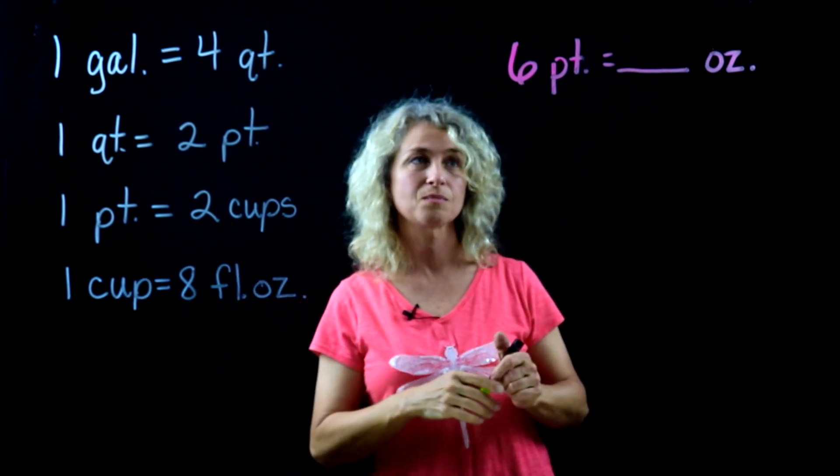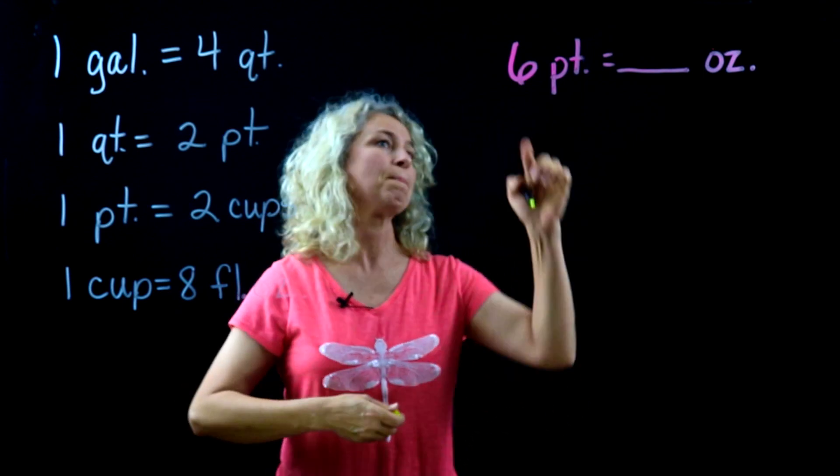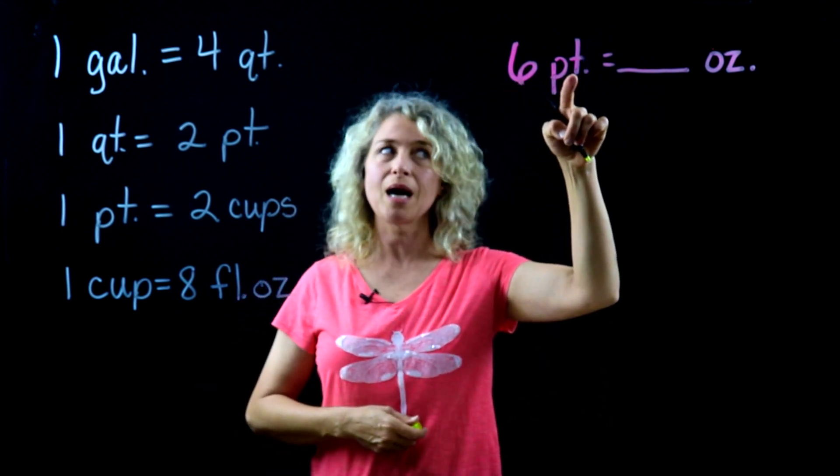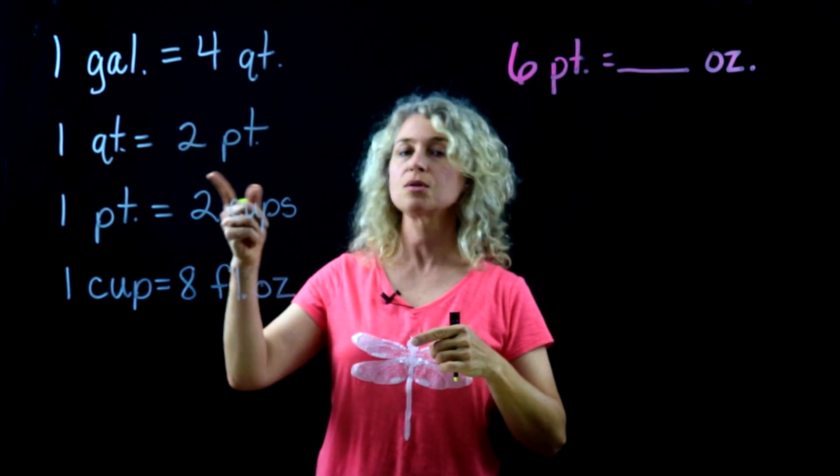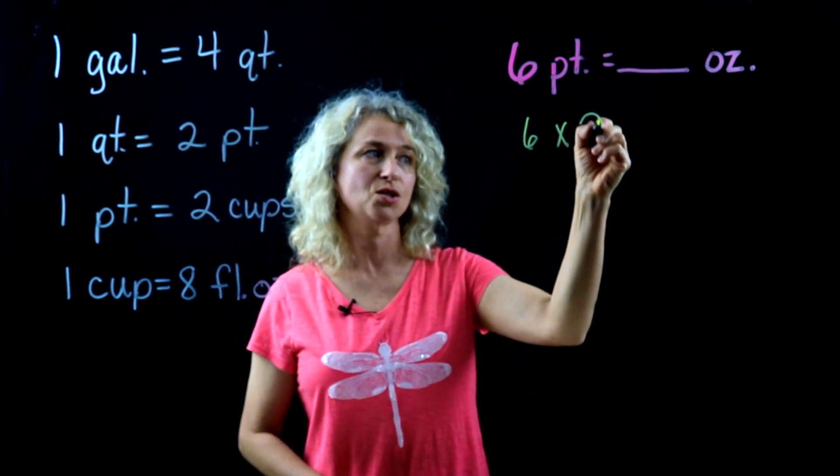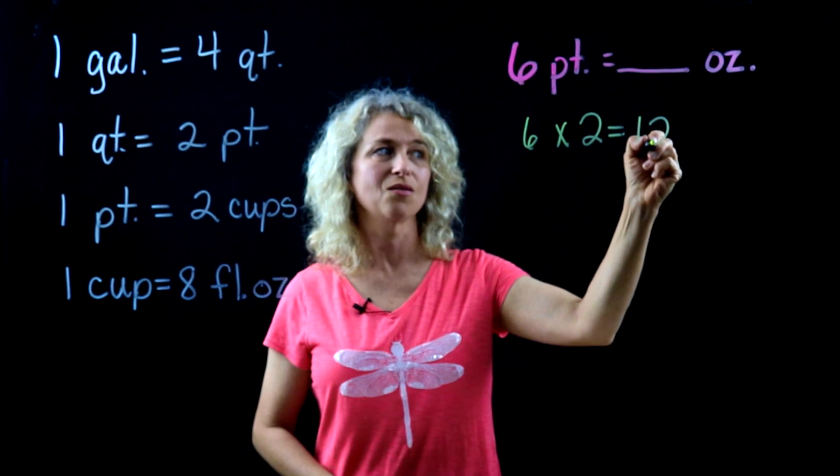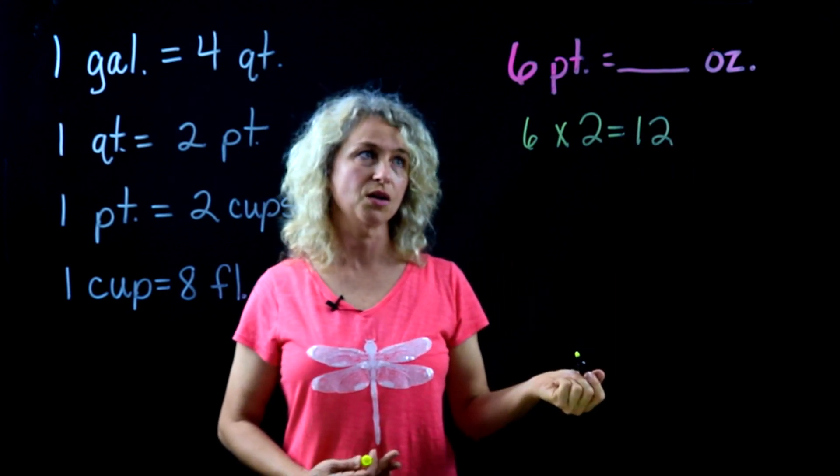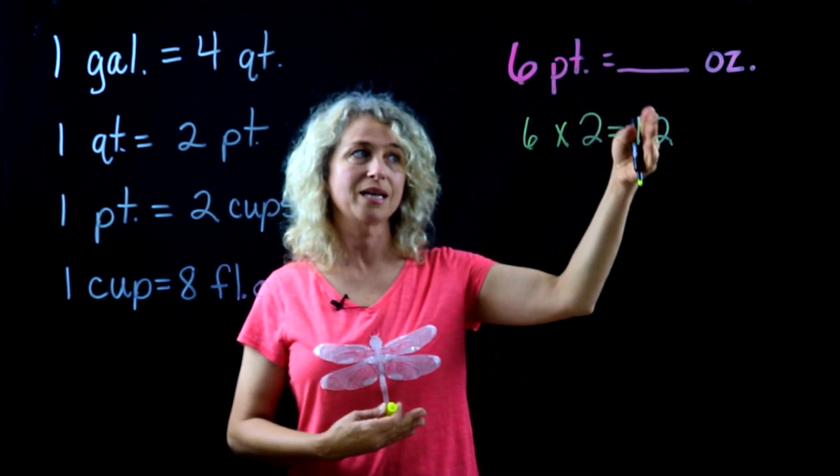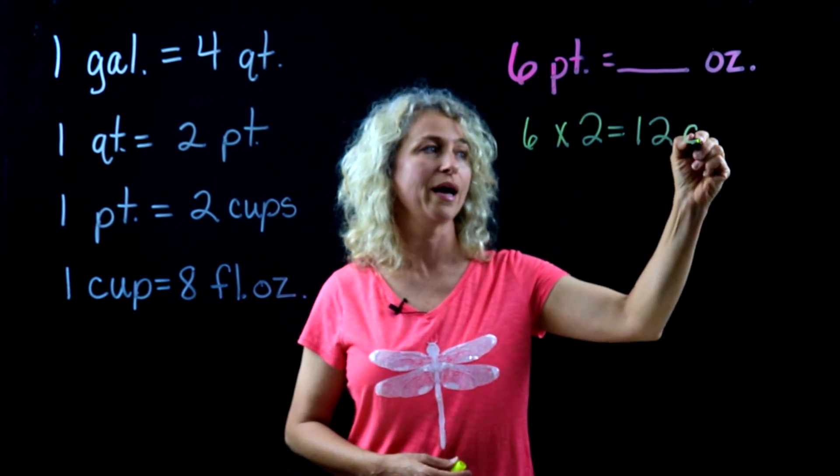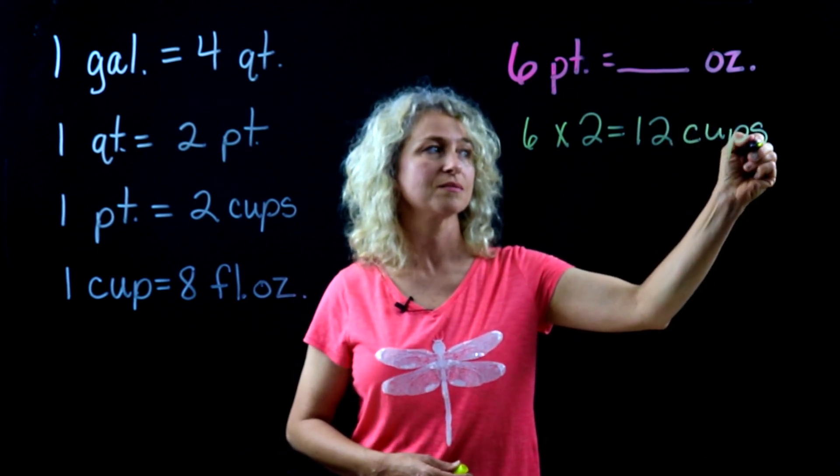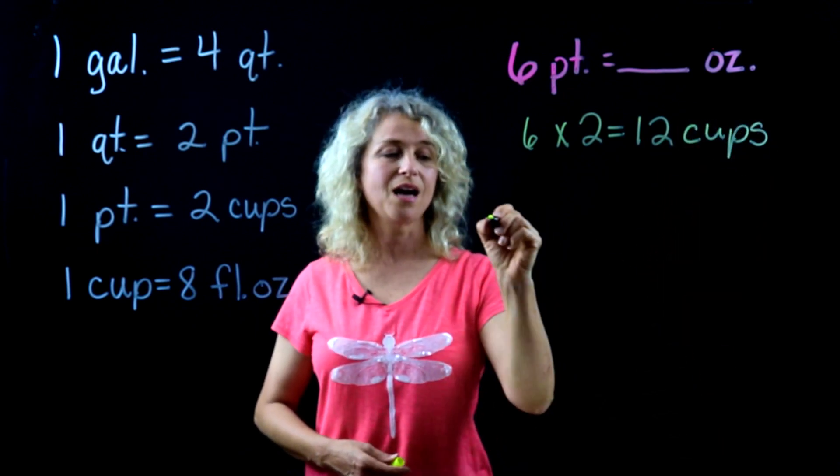How many pints are in a cup? Two. So six times two is twelve. So now we've just converted the pints and it has become twelve cups.